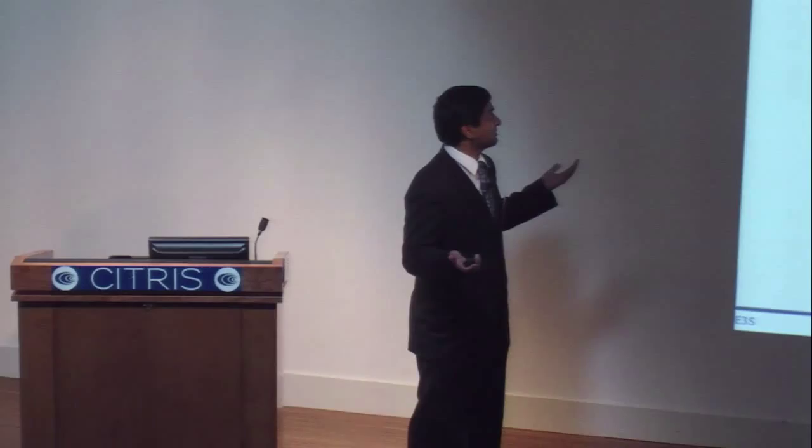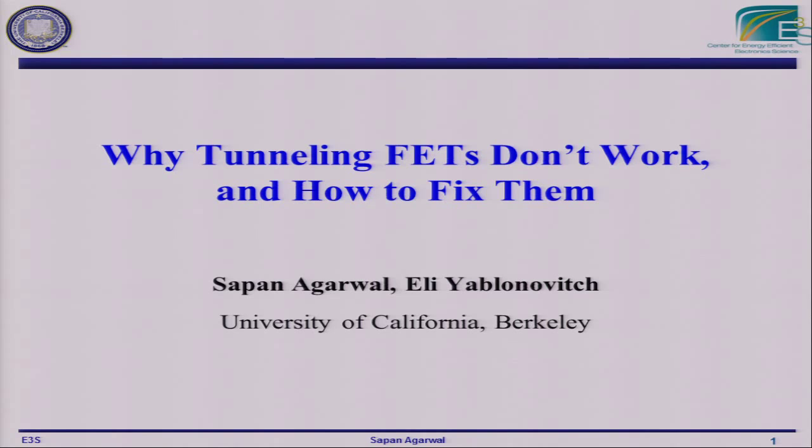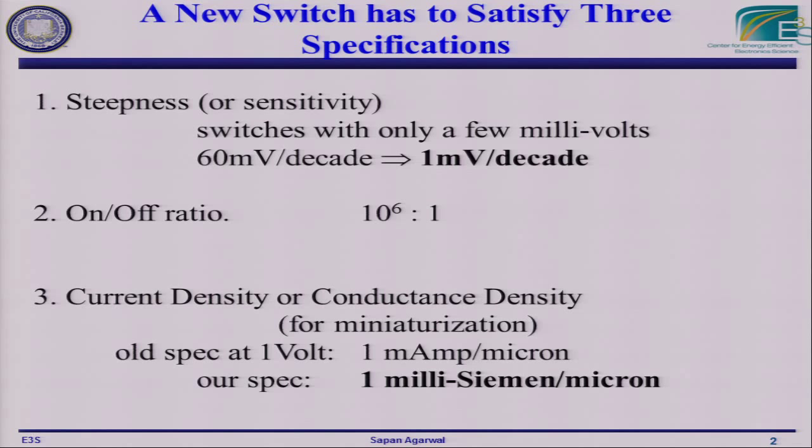I want to talk about why tunnel FETs don't work and how to fix them. The question is, what do I mean by they don't work? To understand that, we have to ask: what do we want tunnel FETs to do? If you want to make a good tunnel FET, there are three metrics that we really need.